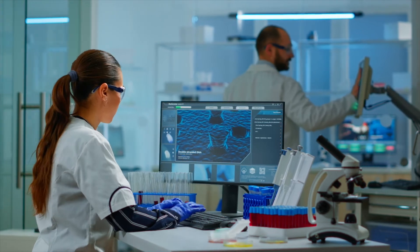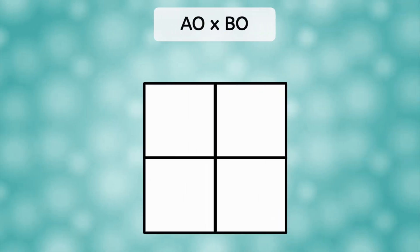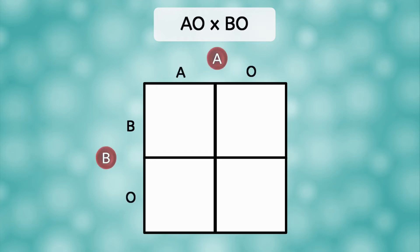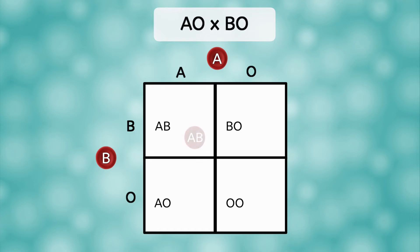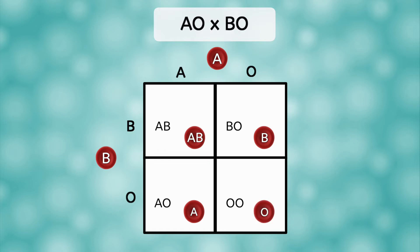If you guessed that we're going to need a Punnett square, you're right! Let's look at the possible offspring for two parents with the genotypes AO and BO. Remember that O is recessive, so these parents would simply have the blood types A and B. We place the parental genotypes on the top and left of the table and fill in the boxes. Then we determine their phenotypes, remembering that A and B are dominant to O, and co-dominant with each other. So an AB genotype is the AB blood type, BO is the B blood type, AO is the A blood type, and OO is the O blood type. From these two parents, any of the four blood types are possible in equal probabilities.